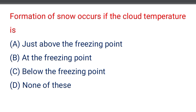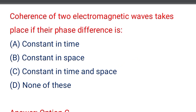The first question: formation of snow occurs if the cold temperature is — option A: just above the freezing point, option B: at the freezing point, option C: below the freezing point, option D: none of the above. The correct answer is option C: below the freezing point.